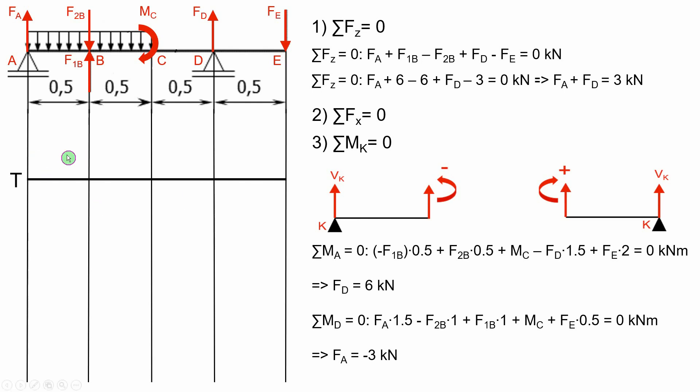On AB section the reaction from point A is minus 3 kN. Therefore the diagram starts with minus 3 value on the negative side. On this section there is also a distributed load of 6 kN per meter acting on 0.5 meters of the beam. So the generated force produced by this load will be 3 kN. This is why we started the diagram from minus 3 and reached minus 6.